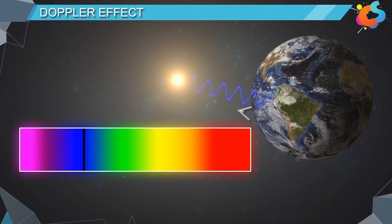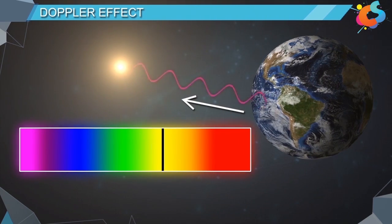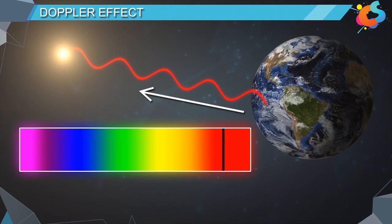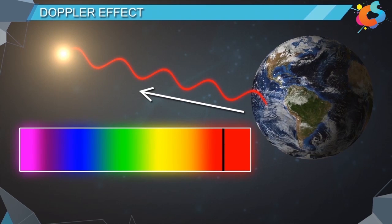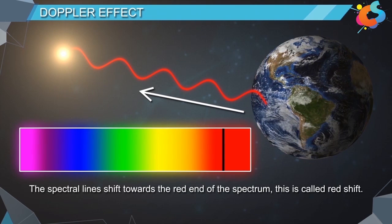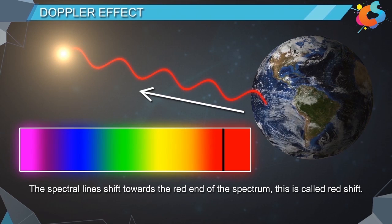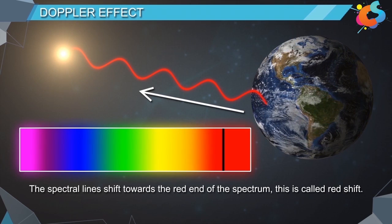Similarly, when the star moves away from the earth, the frequency of the light decreases, the wavelength increases, and the spectral lines shift towards the red end of the spectrum. This is called red shift.